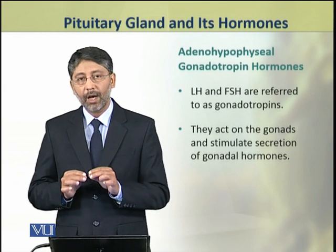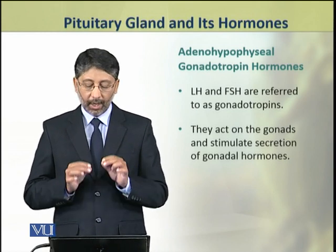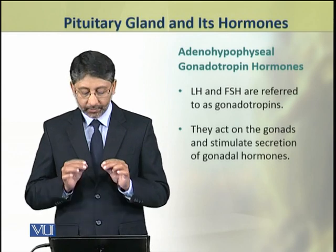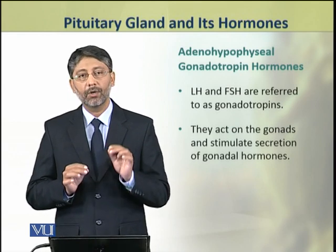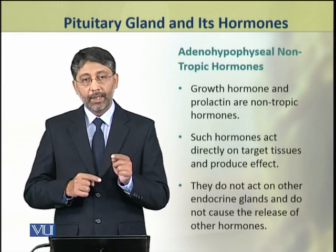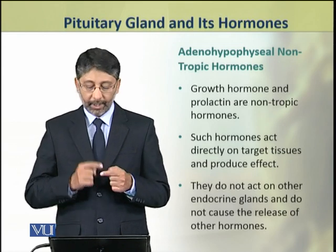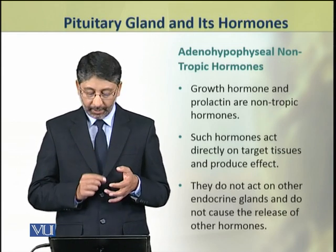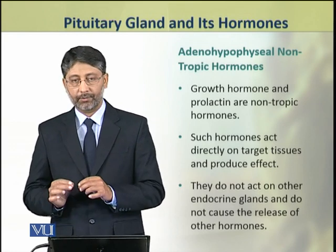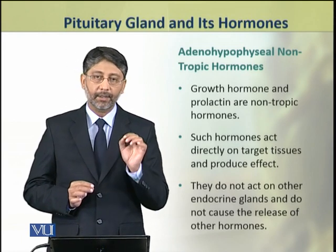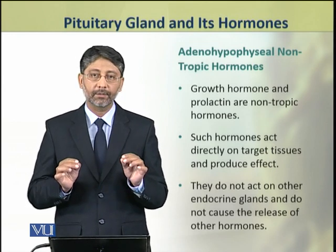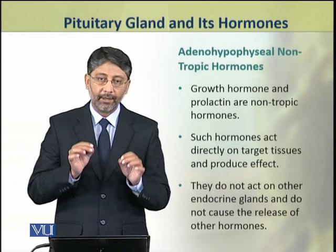The luteinizing hormone and follicle stimulating hormone are called gonadotropin hormones. They act on gonads and stimulate the secretion of gonadal hormones. The other three hormones of adenohypophysis — growth hormone and prolactin — are non-tropic hormones. Such hormones act directly on their target tissues and produce their effects; they do not act on other endocrine glands.